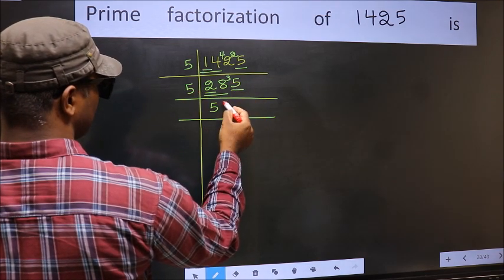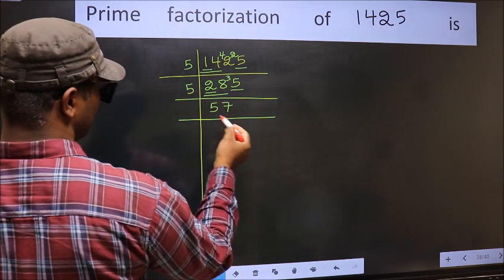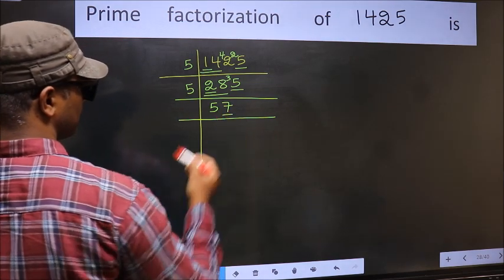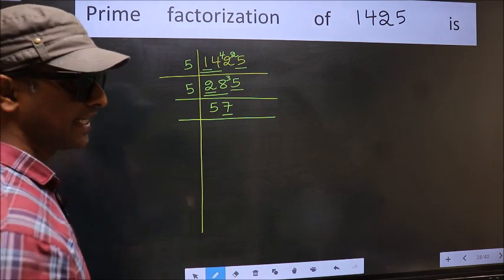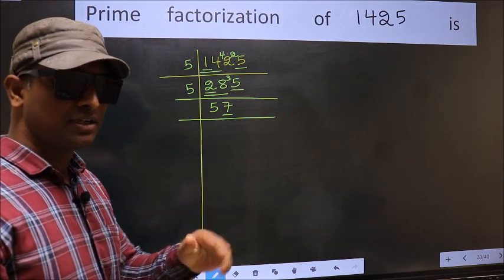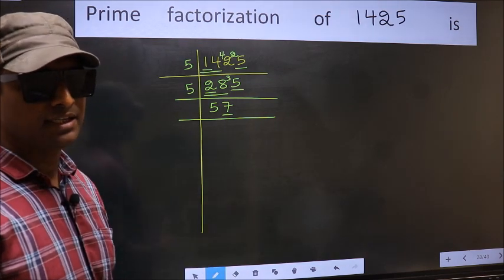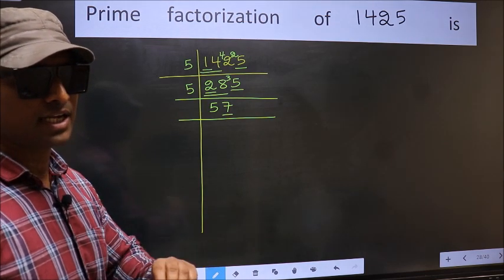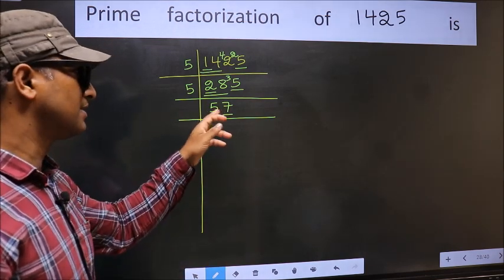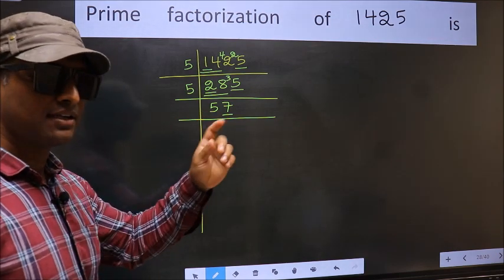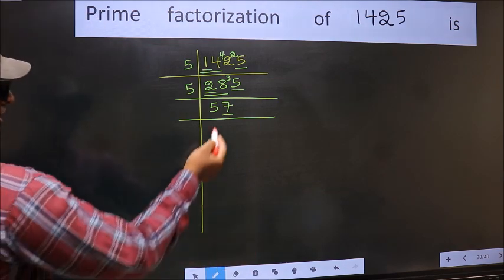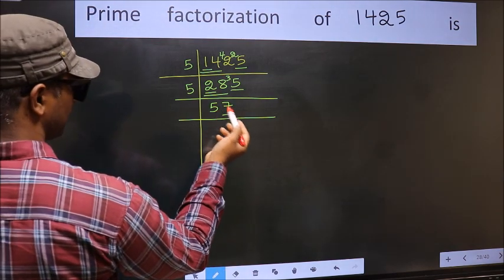When do we get 35 in 5 table? 5 times 7 is 35. Now last digit 7 is not even, so not divisible by 2. Next prime number is 3. To check divisibility by 3, we should add the digits. What I mean is 5 plus 7 is 12. And 12 is divisible by 3, so this number is also divisible by 3.